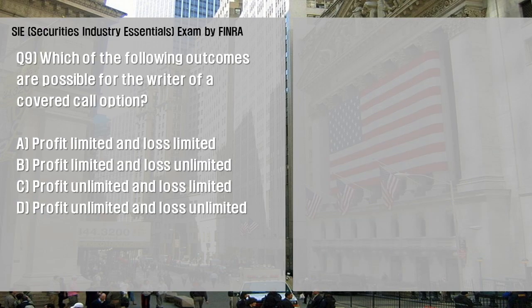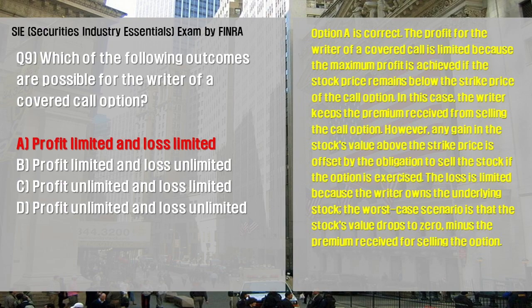Which of the following outcomes are possible for the writer of a covered call option? Option A is correct. The profit for the writer of a covered call is limited because the maximum profit is achieved if the stock price remains below the strike price of the call option — in this case, the writer keeps the premium received from selling the call option. However, any gain in the stock's value above the strike price is offset by the obligation to sell the stock if the option is exercised. The loss is limited because the writer owns the underlying stock; the worst case scenario is that the stock's value drops to zero, minus the premium received for selling the option.